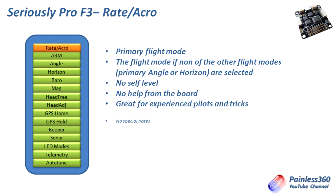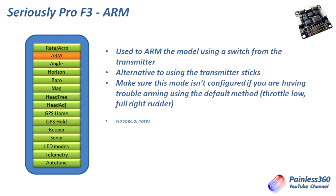The next mode is arm. You can assign a switch on your transmitter so that when you flick it, it turns this mode on and arms the board ready for flight. I typically use the sticks to arm the board, as it's the same convention as the APM, Pixhawk, MultiWii, and CC3D — throttle at its lowest position over to the right arms the board; throttle at lowest position over to the left for the rudder disarms it. Some people really like the arm function, but be careful when setting this up and make sure you're testing it and it's working properly.